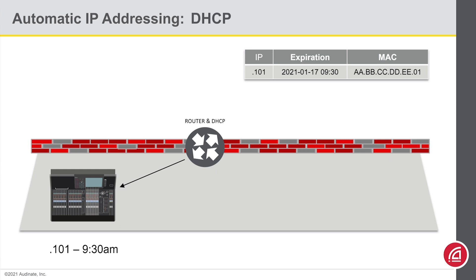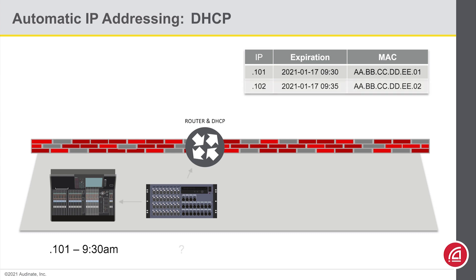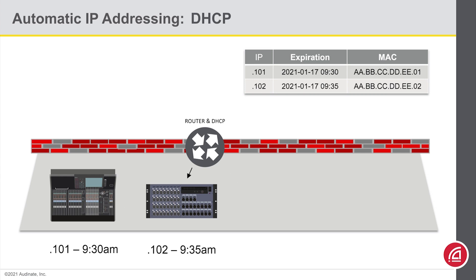The server makes note of the MAC address of the requesting device, the IP address it handed out, and when the DHCP lease will expire. When another device's network port lights up, it sends a broadcast DHCP request that goes to everyone. Again, only the DHCP server responds with the configuration, noting the MAC address and expiration for that configuration. And on this goes as devices join the network.